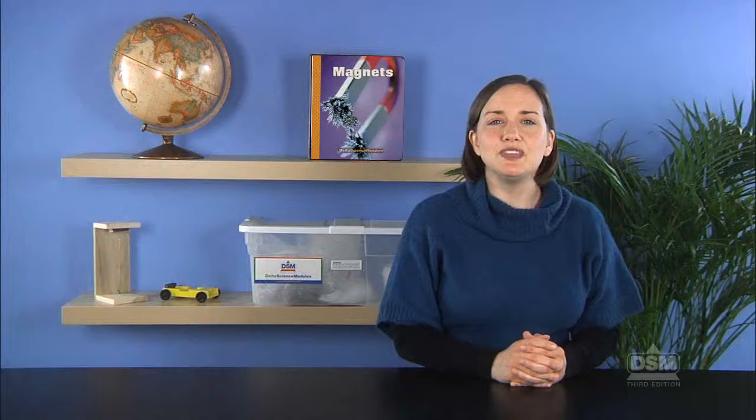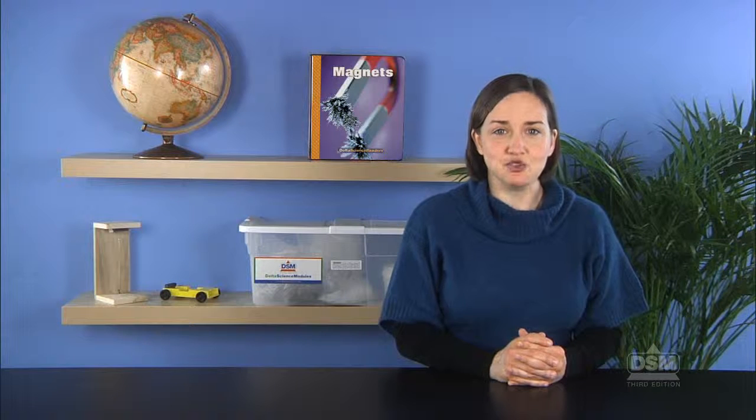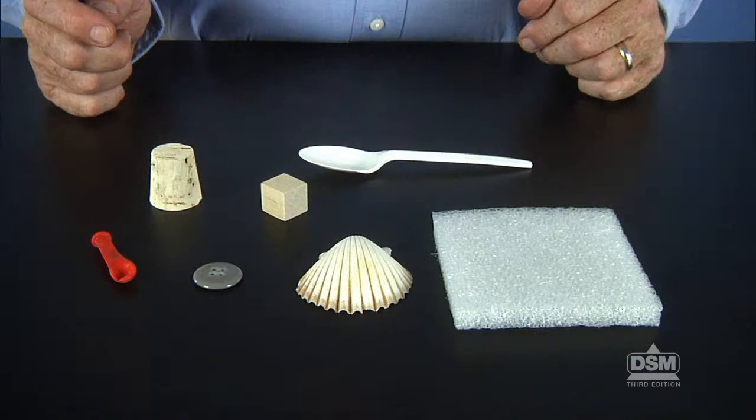Point out that these metal objects are made of aluminum, copper, and brass, respectively. Explain to the class that the metal items made of iron and iron-based metals are attracted to the magnet, and items made of other materials are not attracted to the magnet.